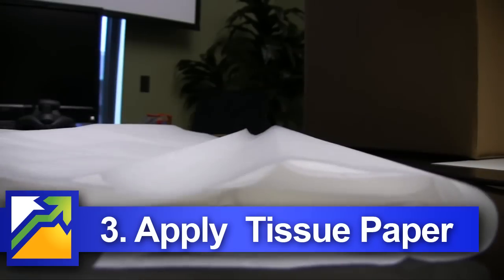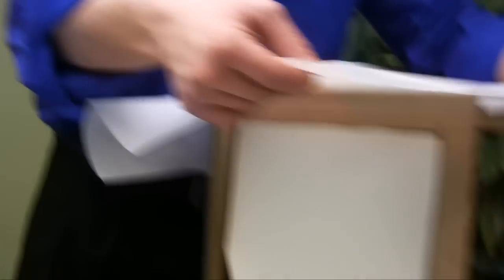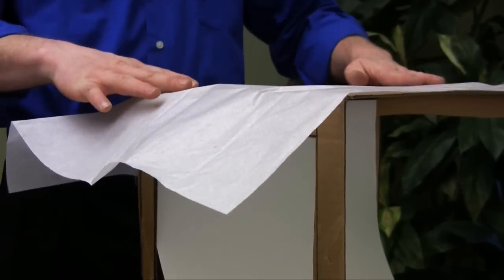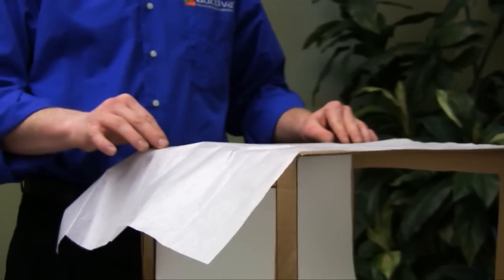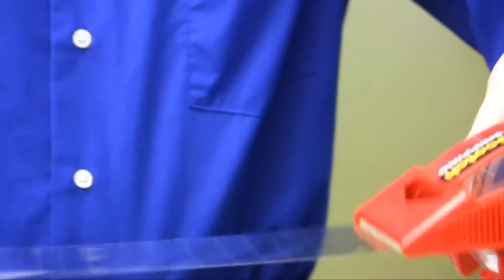Now it's time to lay the tissue paper over the holes we've cut in our box. All I'm going to do is lay the tissue paper over the side that I want it to be. Once I've got the tissue paper here, I'm just going to take one piece of tape to hold that in place.